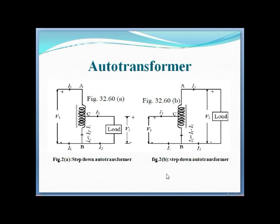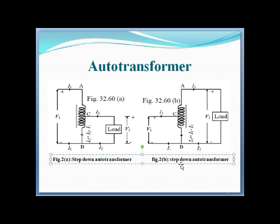In this step-down configuration, AB is the primary part and CB is the secondary part, with the load connected across CB. In the second figure (figure 2b), another step-down transformer connection is shown. Here the load is connected and the voltage V2 is less than the applied voltage V1 — that is how step-down operation is achieved.